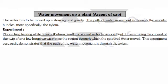Water movement up a plant is called ascent of sap. The water has to be moved up a stream against gravity. The path of water movement is through the vascular bundles, more specifically through the xylem.